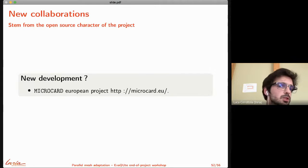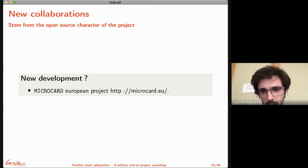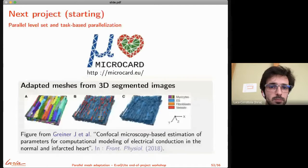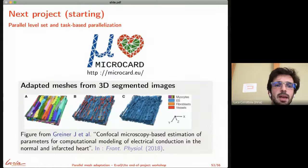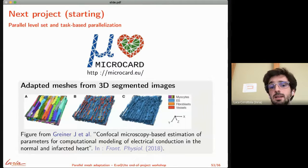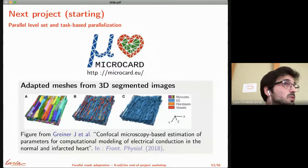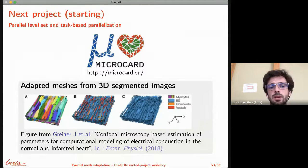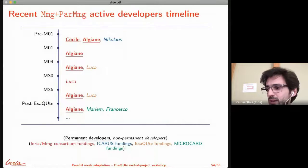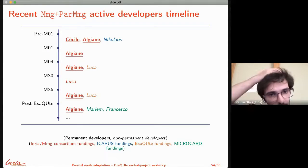In practice, how these developments will be funded - mostly with a new European project that is starting, called MicroCard. It will aim at generating and adapting meshes for cardiac simulations at the cellular scale, so very big meshes in the long term, aiming to target meshes with 10 to the power 12 elements. It's a three-year project and will provide funding for some postdocs.